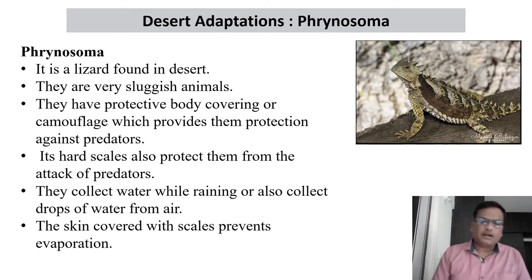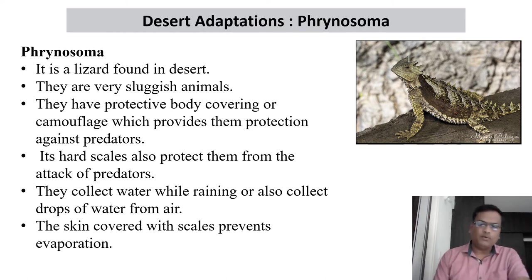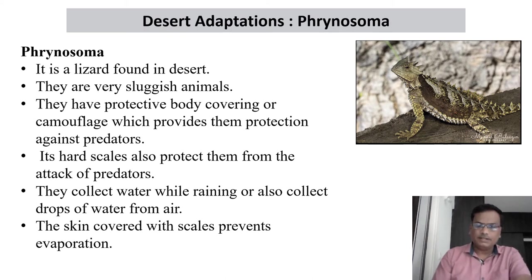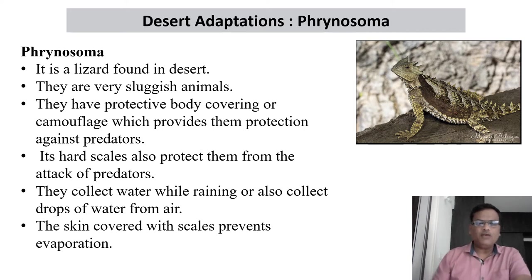One very important adaptation in desert animals is that they prefer to come out at night and avoid the day because the day is too hot — the sand is too hot and the animal cannot simply move on it. They will come out in the night — that is one adaptation. The Phrynosoma also has a protective body covering or camouflage which provides protection against predators.